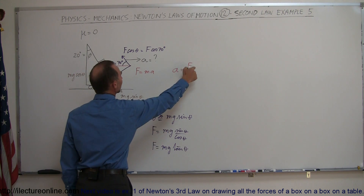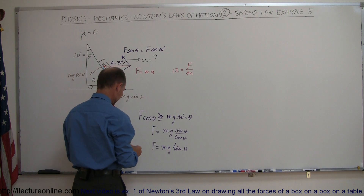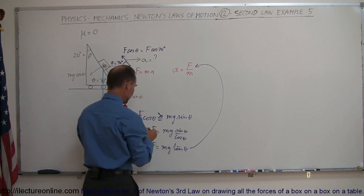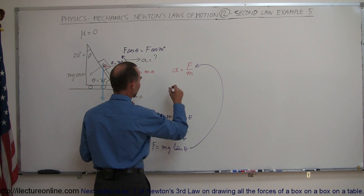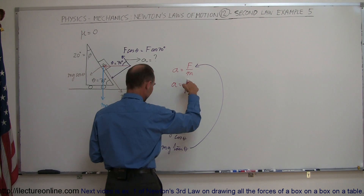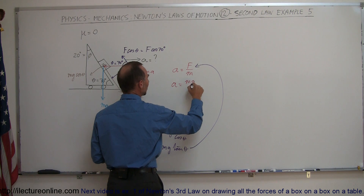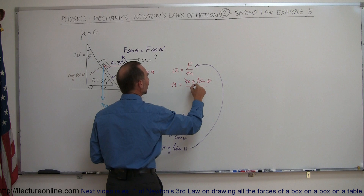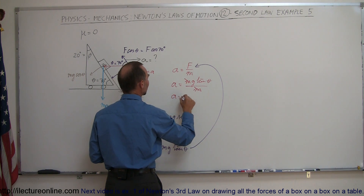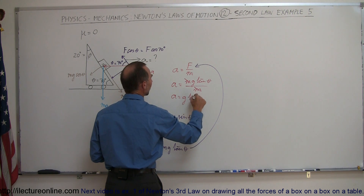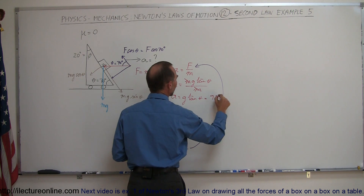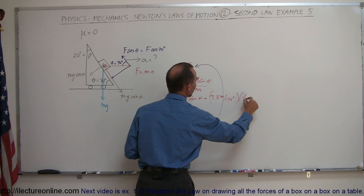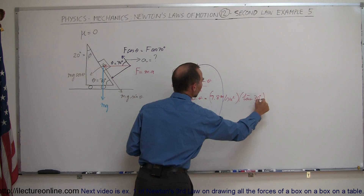Plugging that in, we can find the acceleration. The acceleration required to keep the block from sliding down is equal to the force — which is mg·tan(θ) — divided by m. Notice that the m's cancel out, so the acceleration equals g·tan(θ), which in this case is 9.8 m/s² times the tangent of 70 degrees.